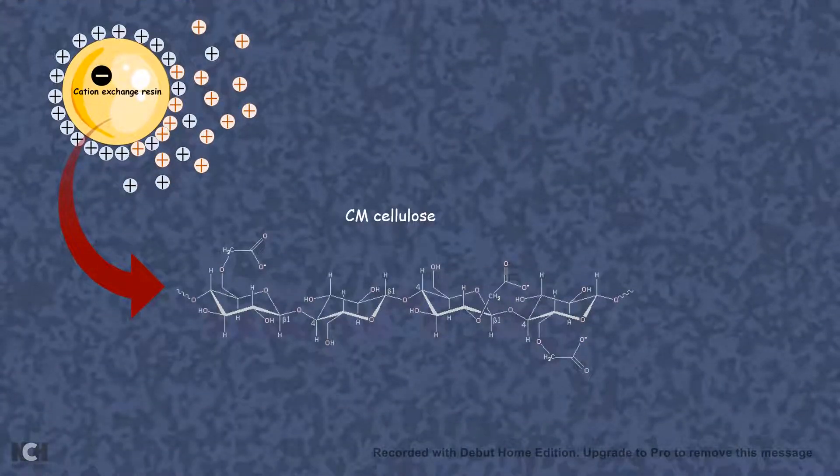The cation exchange resin example which is widely used is carboxymethyl cellulose. Carboxymethyl cellulose has a carboxy terminal, which is a negatively charged group, which is attracting the cations towards it.